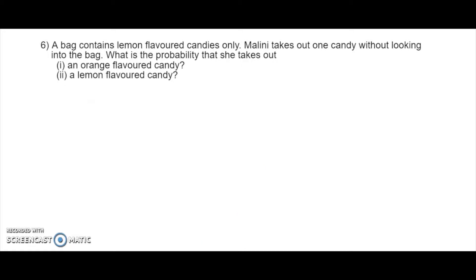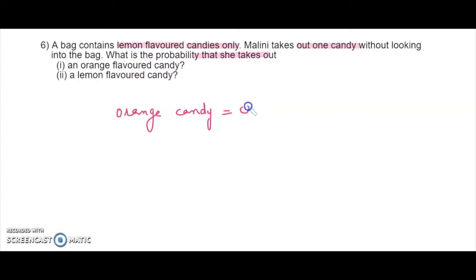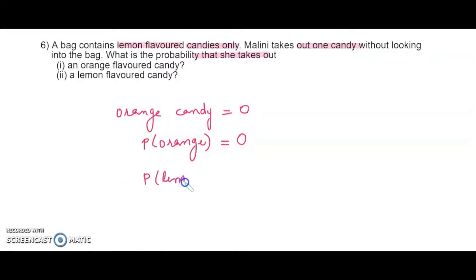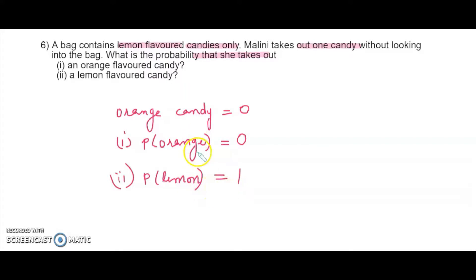A bag has lemon-flavored candies only and Malini is trying to take out one candy. What is the probability that she takes out an orange candy and a lemon candy? There are zero orange candies, so the probability of getting an orange candy is impossible — the probability is 0. All candies are lemon, so whichever candy you pick will be lemon. The probability of picking a lemon candy is 1 — a certain event.